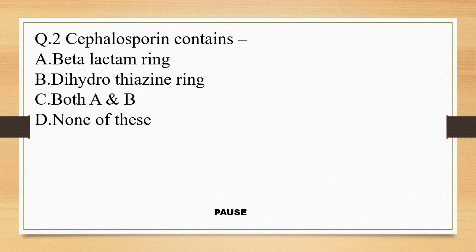Question 2. Cephalosporin contains: option A, beta-lactam ring; option B, dihydrothiazine ring; option C, both A and B; and option D, none of these. And the right answer is option C, both A and B. So cephalosporin contains beta-lactam ring as well as dihydrothiazine ring.